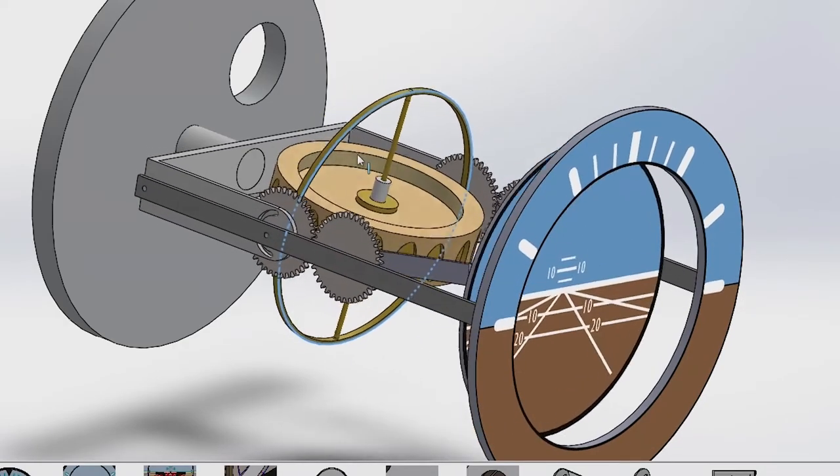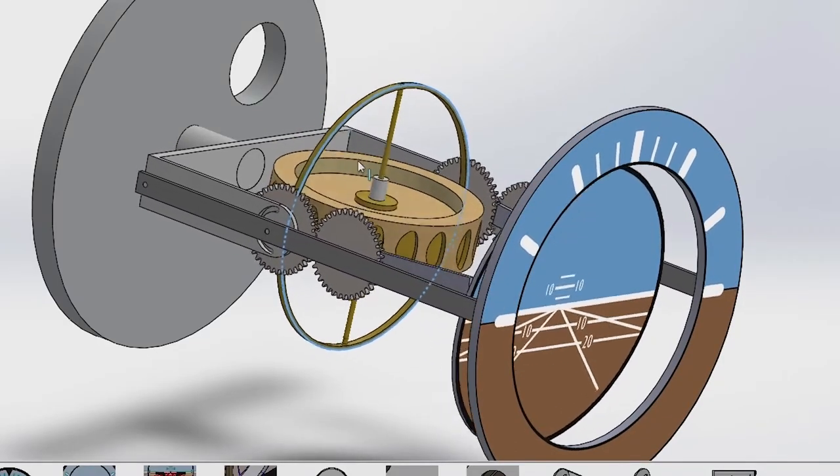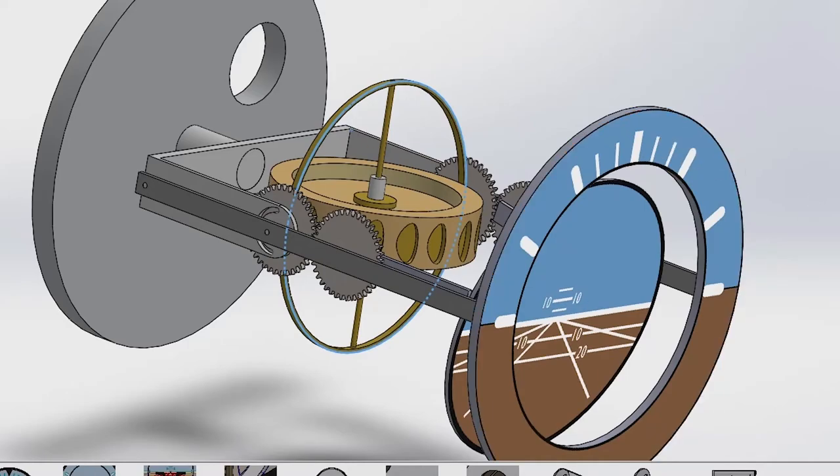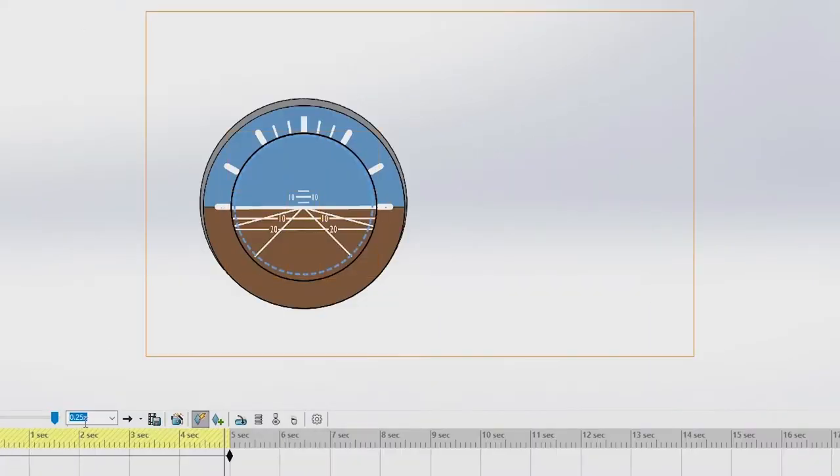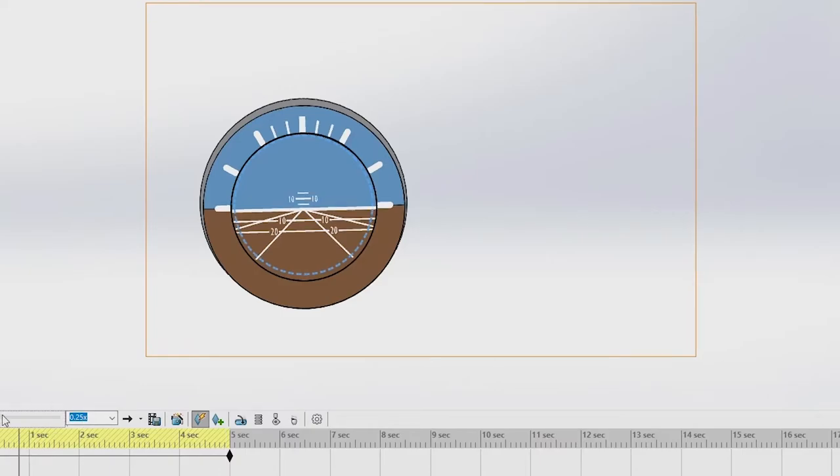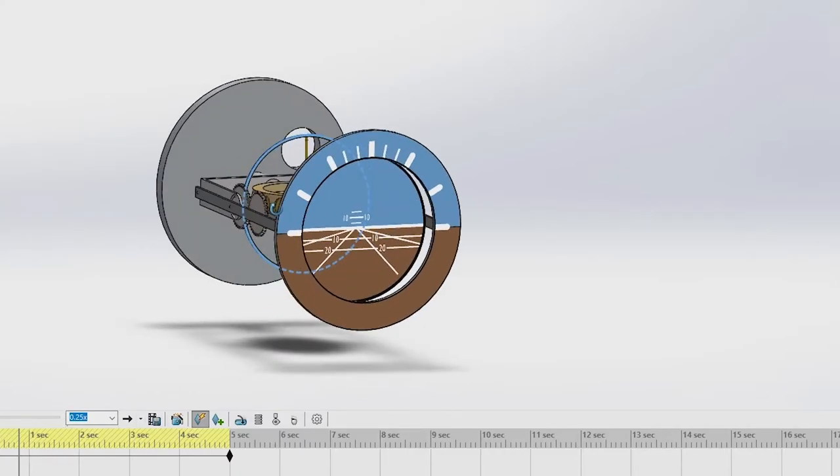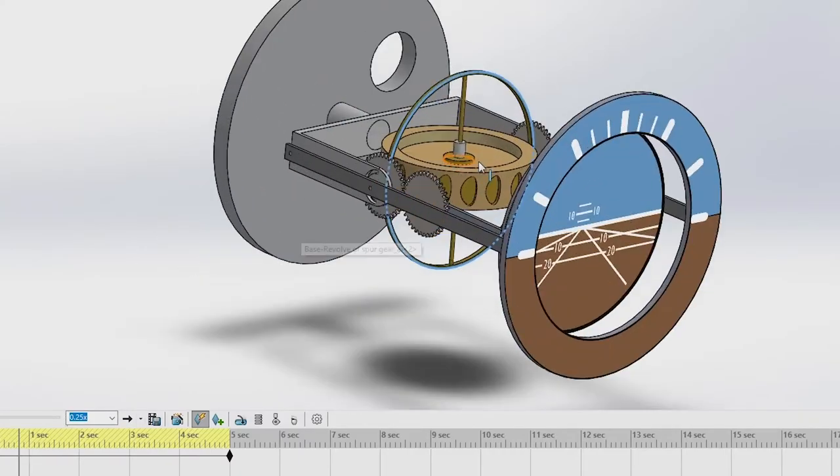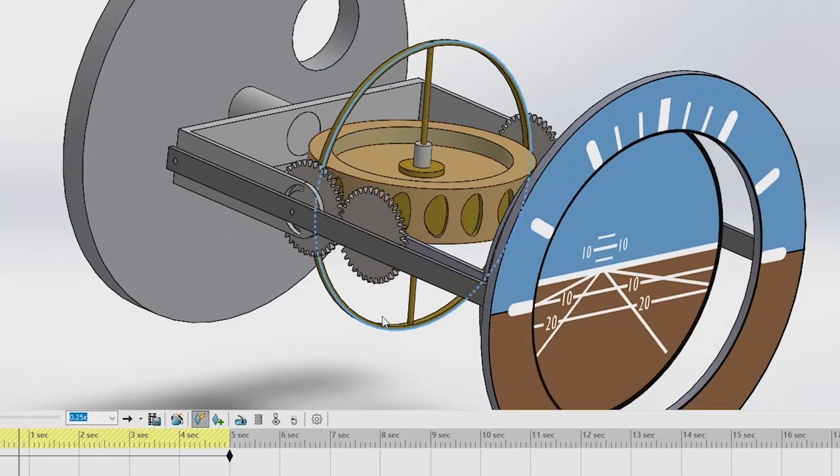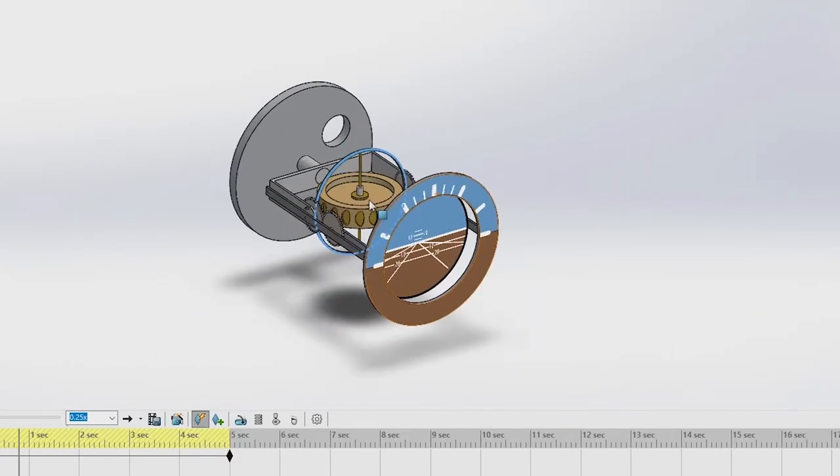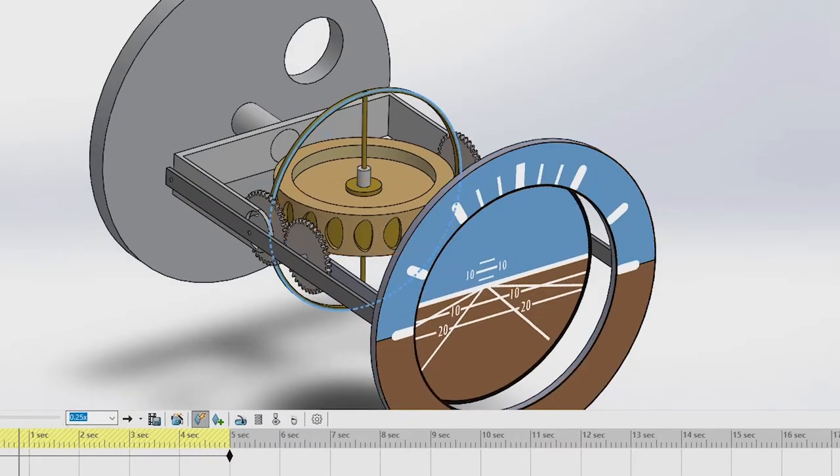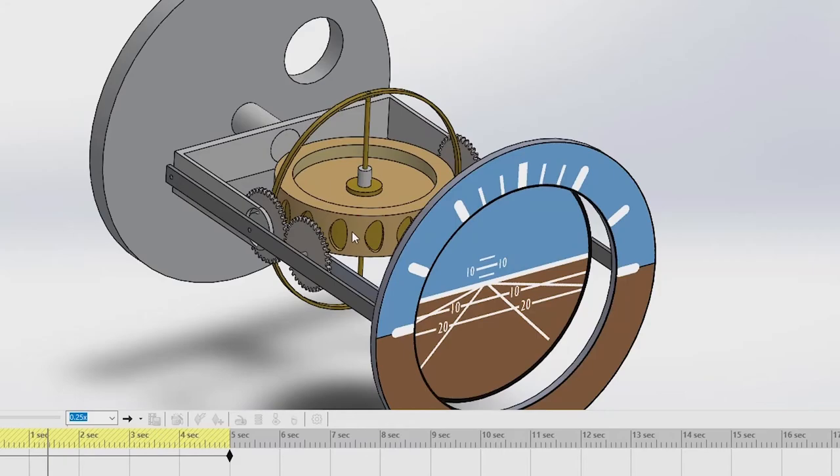In simplest form, a gyro is a heavily spinning disc that is able to maintain its position and orientation. Gyros operate based on two principles, rigidity in space and precision. Rigidity in space refers to a gyro's ability to remain in a fixed position in the plane in which it is spinning by mounting the gyroscope on a set of gimbal rings. The gyro is able to rotate freely in any direction. Thus, if the gimbal ring rotates, the spinning disc will remain in the same plane in which it was originally spinning.